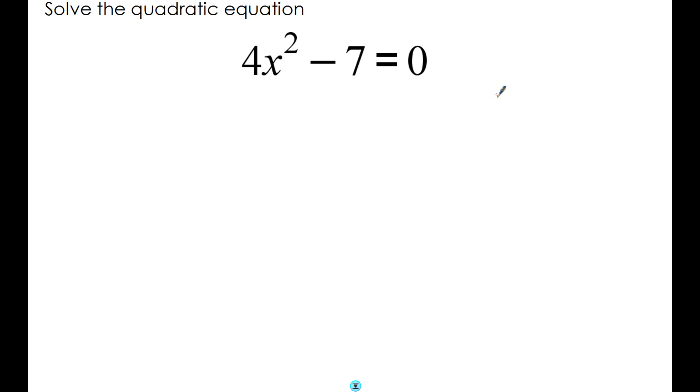In this example here, same again. We say a is 4. Now we don't have any x's in the middle this time. That's missing. That just means that b must be 0, because there are no x's. And c is -7.